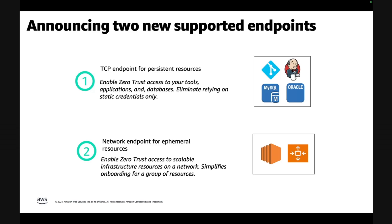The second type of endpoint we've launched is called the network endpoint, which is built for ephemeral resources. This allows you to onboard resources at scale by specifying a network. Once you specify the network, the endpoint enables access to each resource on the network. The users still connect to one resource at a time, and every time they connect to a resource, their policy is enforced and their access is logged.